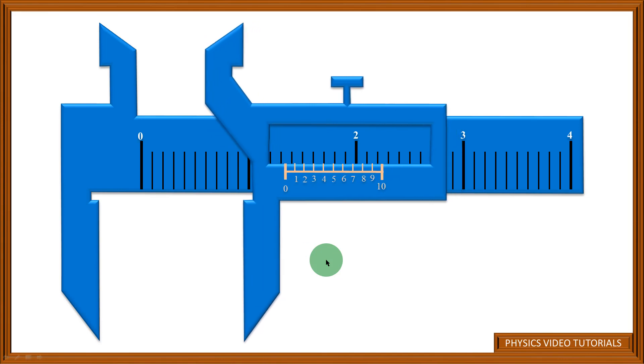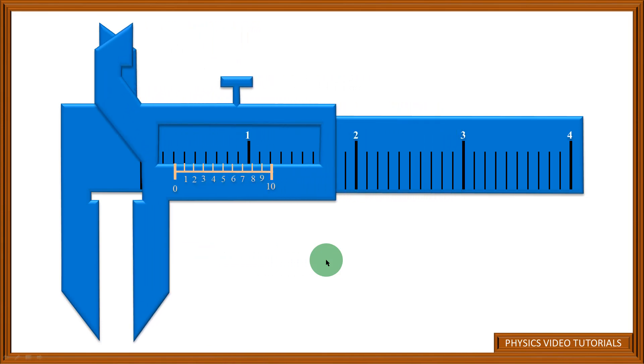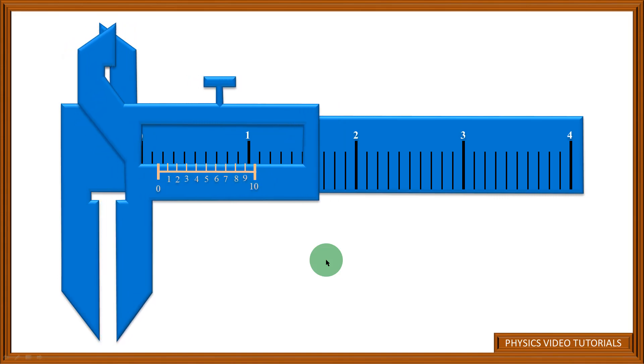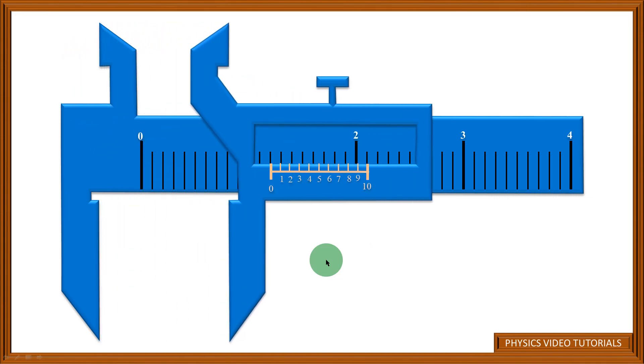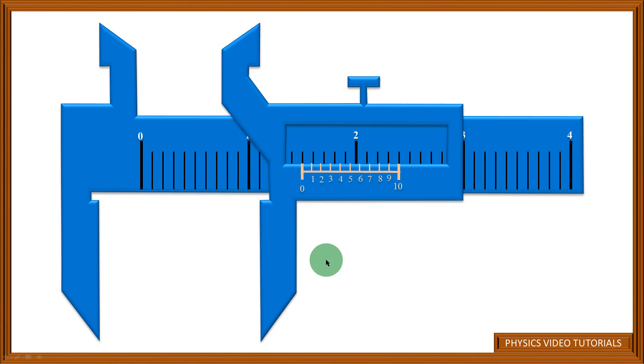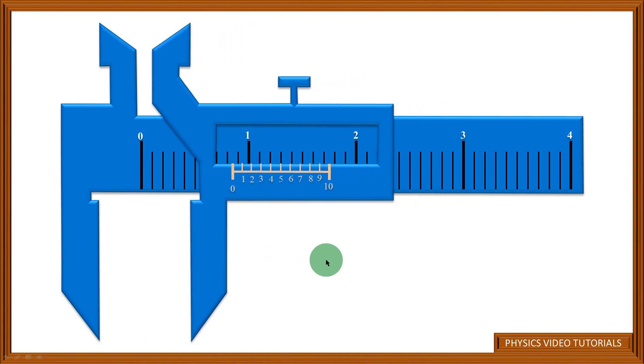What you see here is a simulation of Vernier calipers. It clearly shows how the Vernier scale, which is mounted on the sliding jaw, moves along the main scale.